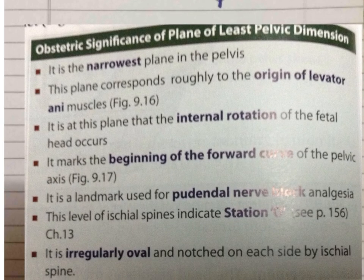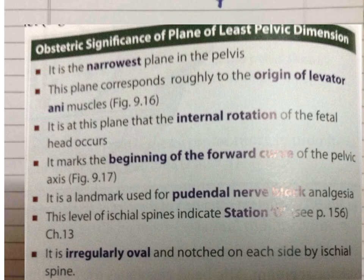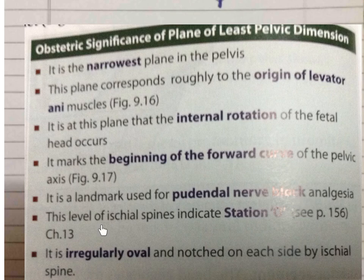The obstetric importance of the plane of least pelvic dimension: it is the narrowest plane of the pelvis and corresponds roughly to the origin of the levator ani muscles. It is at this plane that internal rotation of the fetal head takes place. It marks the beginning of the forward curve of the pelvic axis, is a landmark for pudendal nerve block analgesia, and the level of the ischial spines indicates station zero. The plane is irregularly oval, notched on each side by the ischial spines.